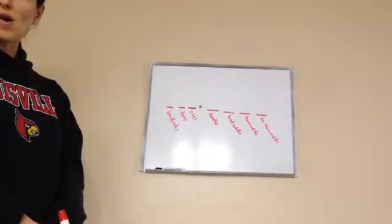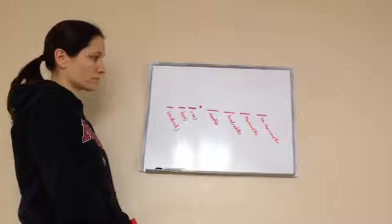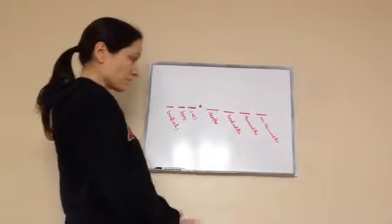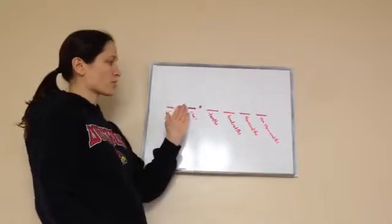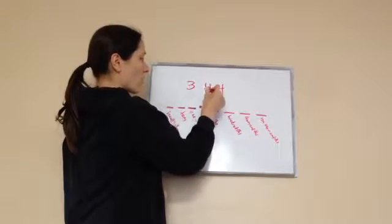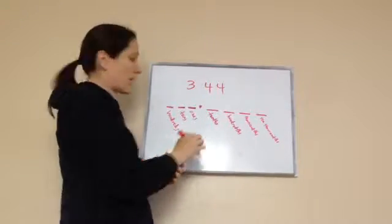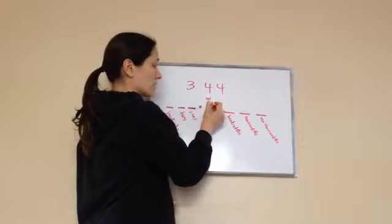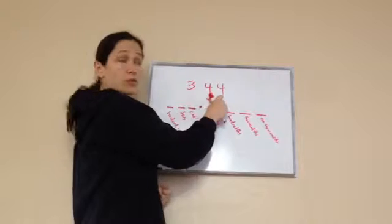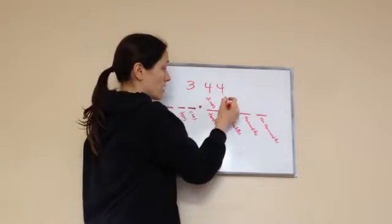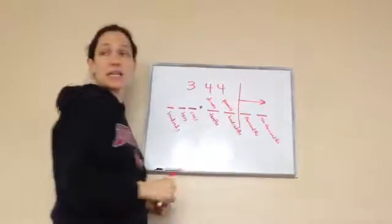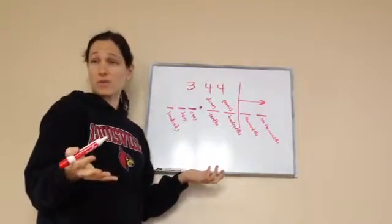Ten thousandths — written numerically that's ten comma zero zero zero. Now remember: if I said I had three dollars and forty-four cents, what would I use for the four in the tenths place? Tenths — dimes! Four dimes. And the hundredths would be like four pennies out of a hundred. So dimes equal tenths and pennies equal hundredths.